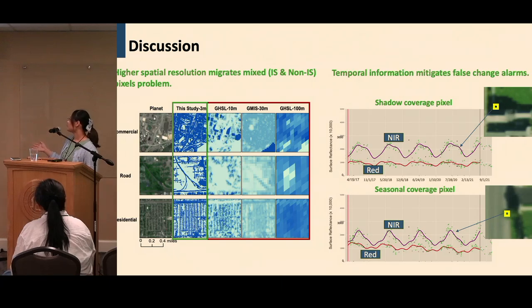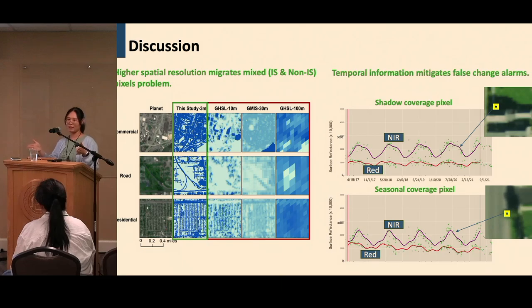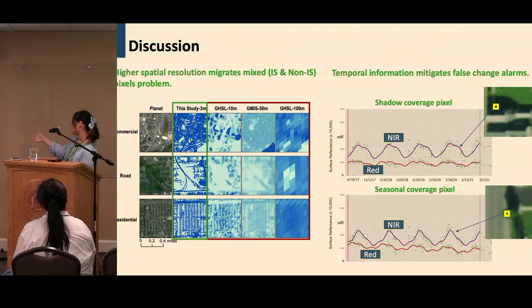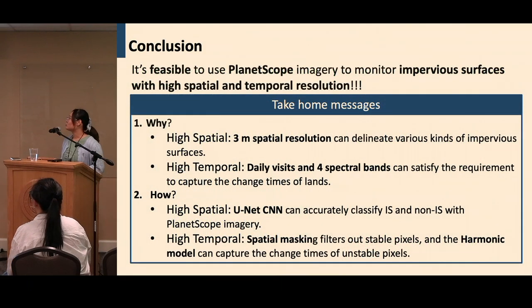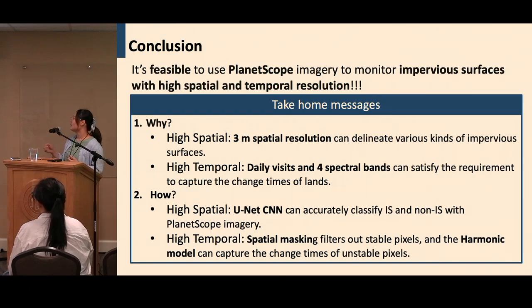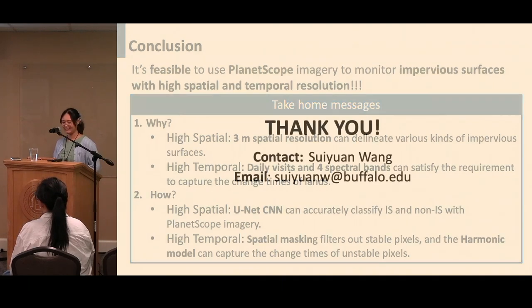Additionally, we found that the temporal information used in step two is very useful for mitigating false alarm errors that occur when using only two images to detect changes. For example, shadows and seasonal coverage can cause many errors when using just two scenes, but the time series model can solve that problem. In conclusion, it is indeed feasible to use PlanetScope imagery to monitor impervious surface at high temporal and high spatial resolution using the U-Net combined with the harmonic model. Thanks for listening.